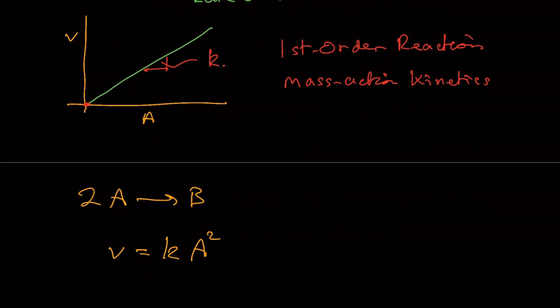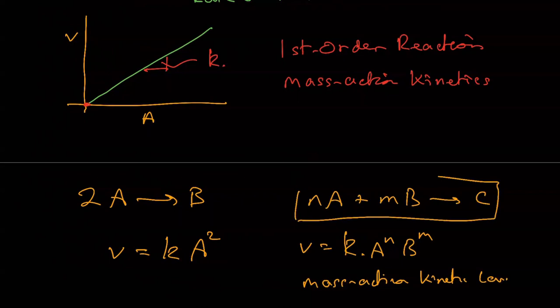And when you have two probabilities like that, you multiply them. And so you end up with A squared. In fact, this can be completely generalized. If you have nA plus mB going to C, then the rate law is actually the probabilities of all of these meeting, which is then a rate constant times A to the power of n times B to the power of m. So you actually can generalize this. And this is the full mass action kinetic law. In principle, you can extend this to as many species as you want. But of course, that becomes a bit unrealistic in the sense that the likelihood of lots of molecules meeting simultaneously in one instant is actually very rare.